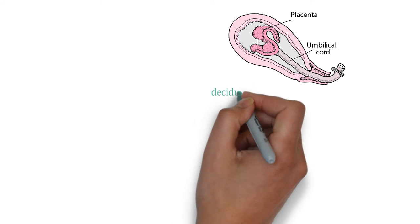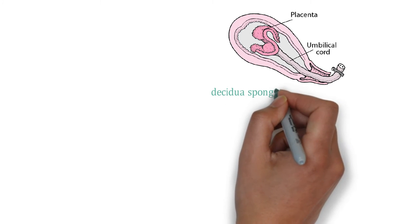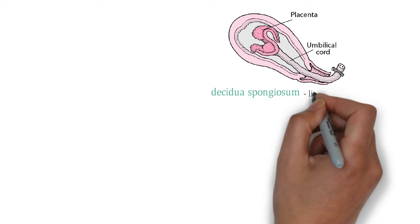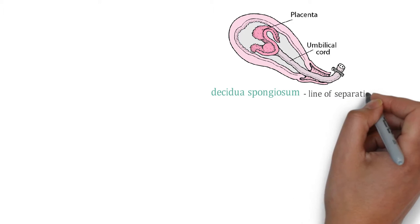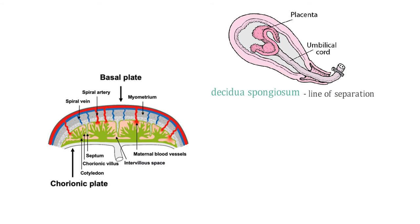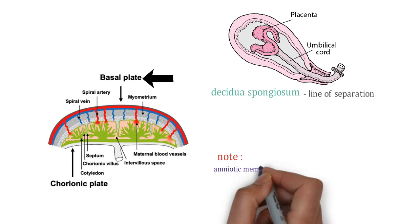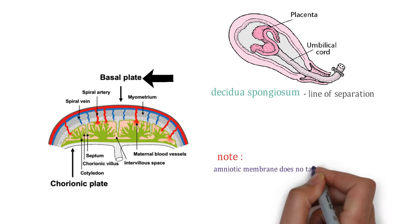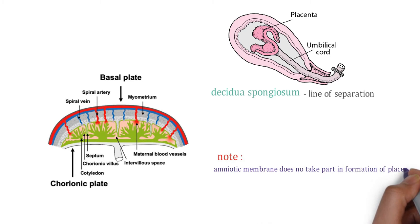After the birth of the baby, the placenta separates. The line of separation is through the decidua spongiosum. The placenta consists of two plates: the chorionic plate and the basal plate. Remember, the amniotic membrane takes no part in the formation of the placenta.